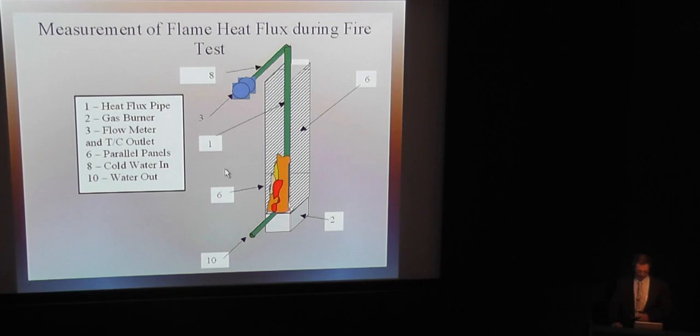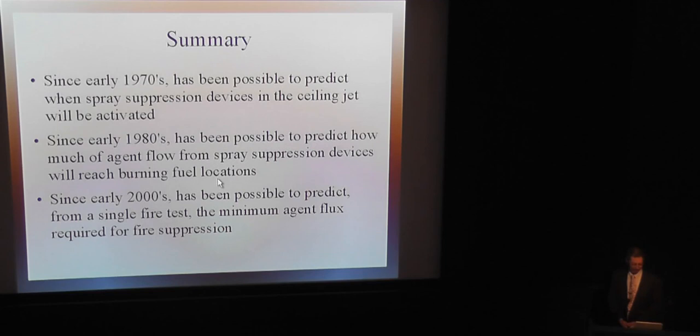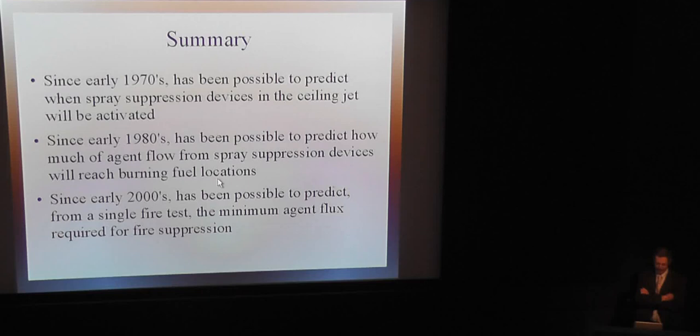Summarizing the work I did at FM over the years: since the early seventies, using the ceiling jet formulas, it's been possible to predict when devices near the ceiling would be activated. Then beginning in the eighties, you could do the spray-plume interaction and predict how much of the agent flow would actually arrive near the fire. And finally, in the 2000s, we've been able to predict from a single fire test the minimum agent flux you need for fire suppression. Thank you very much. It's really an honor to have been selected to give this talk, and I appreciate it deeply.